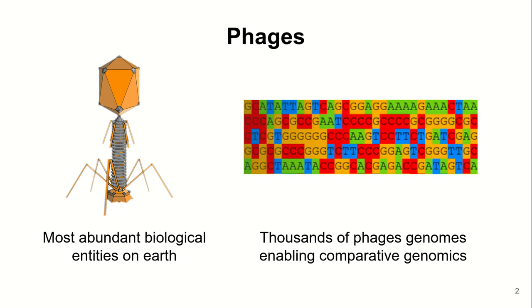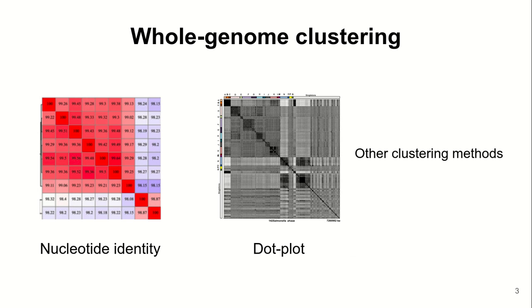With the advent of next-generation sequencing methods, researchers have been empowered to conduct massive data analysis and comparisons at the genomic level, especially the genome of phages which are extensively studied by comparative genomics. This process very often involves whole genome clustering of the phages into clusters that have a biological and functional meaning.